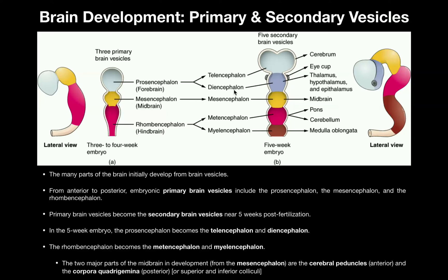The diencephalon becomes the thalamus, hypothalamus, and epithalamus. Technically it would also develop into the eye cup, but generally we consider the thalamus, hypothalamus, and epithalamus. The epithalamus is essentially the pineal gland, which produces melatonin.